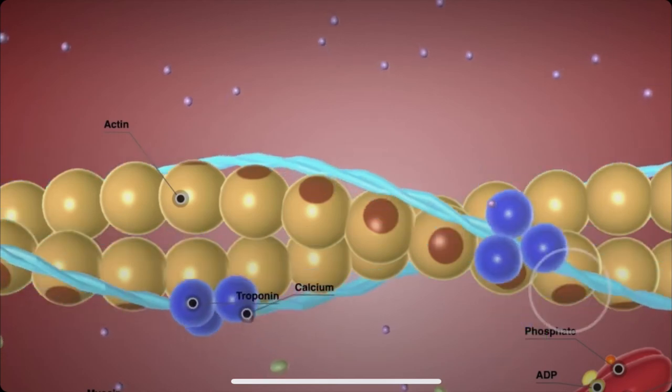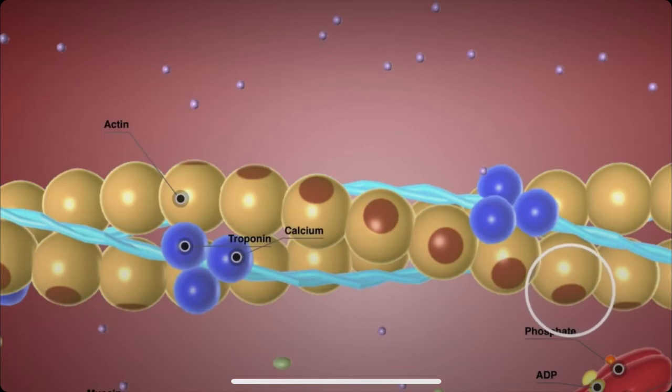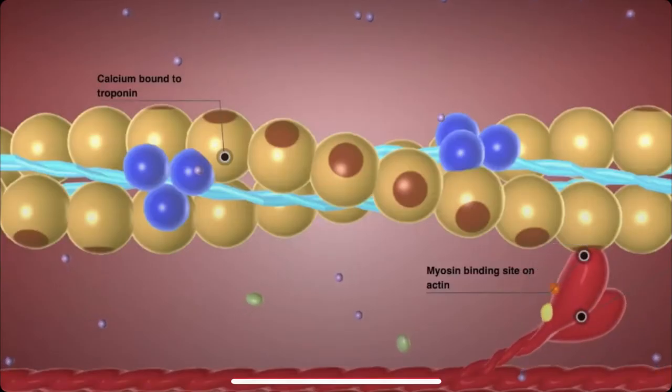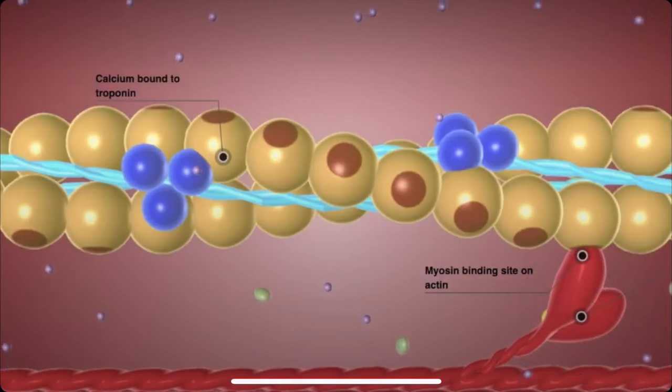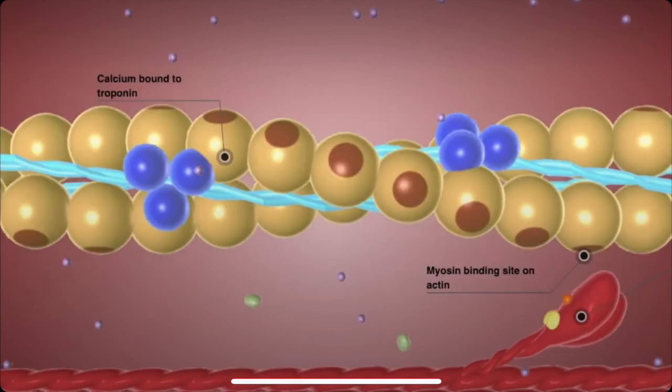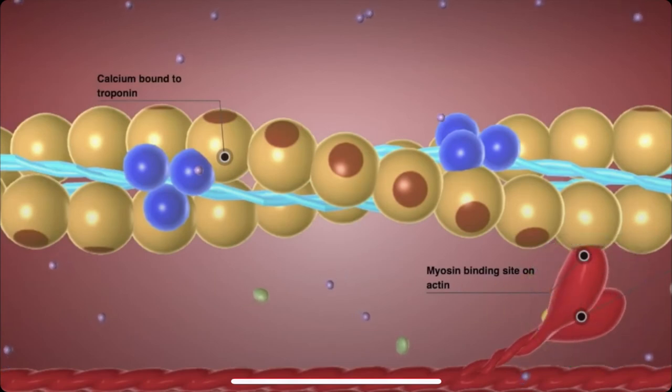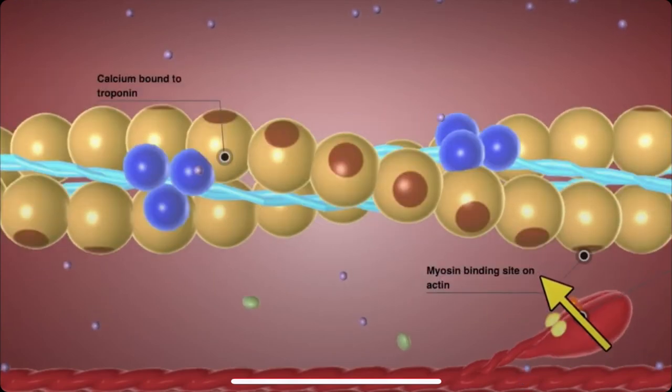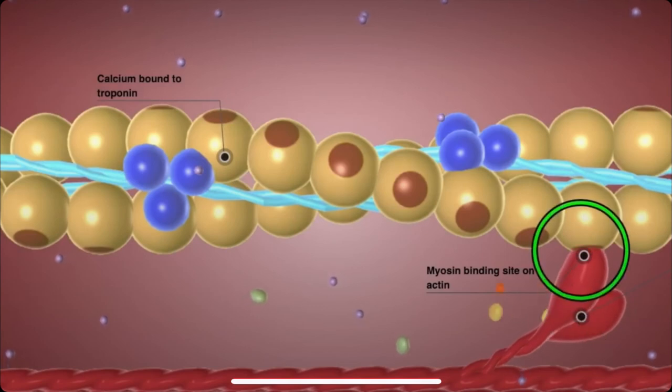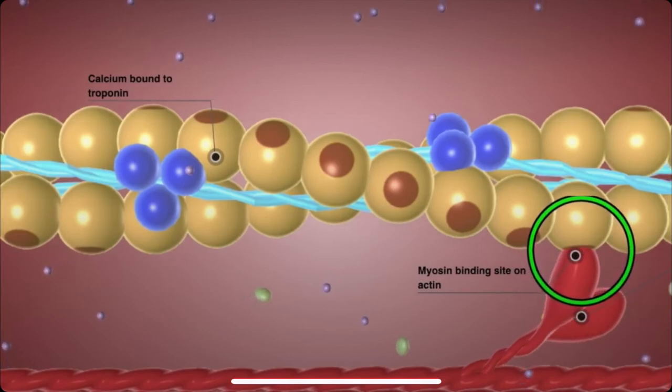Now that the active site on actin is exposed, ATP (adenosine triphosphate) binds to myosin and is hydrolyzed into adenosine diphosphate and phosphate, releasing energy. This energy allows the myosin head to cock backwards into a high energy position and bind to an exposed active site on the actin, generating a crossbridge between actin and myosin.